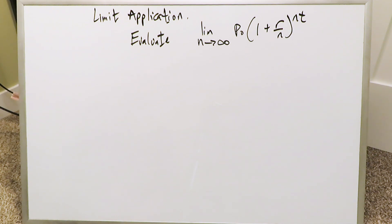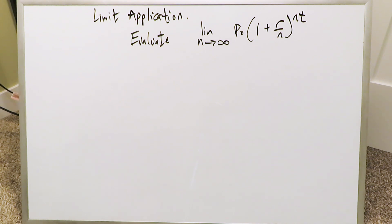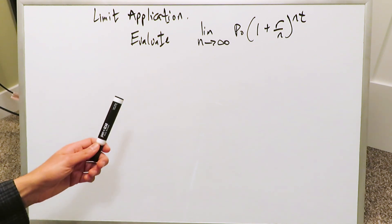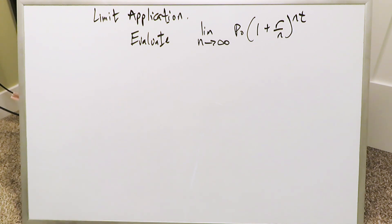Good evening everyone. I'm Mr. Ish. Thank you for watching this video. We are looking here at a limit application where we have to evaluate a specific limit — that right there is a portion of the formula, specifically the functional part of the compound interest formula.